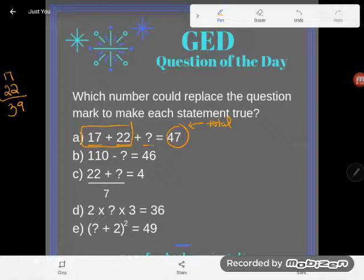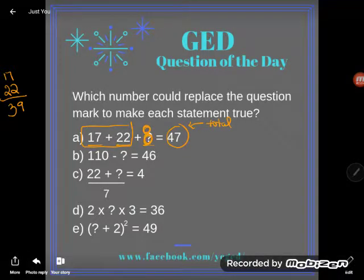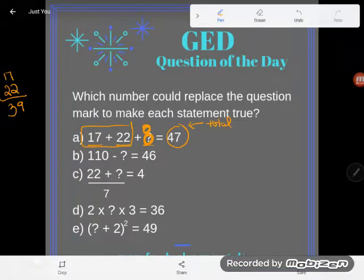So from 39 I would go 40, 41, 42 and I'm using my fingers, 43, 44, 45, 46, 47. Looks like I had to go up eight more to get from that 39 I already had to 47. And so I'd say that a number that could replace that would be 8.